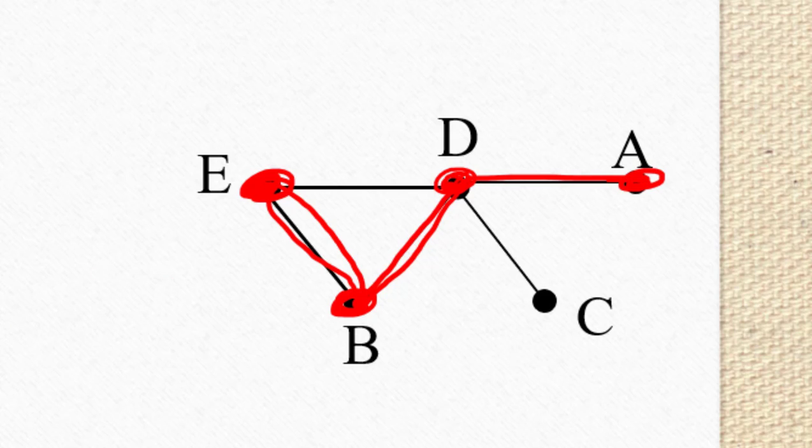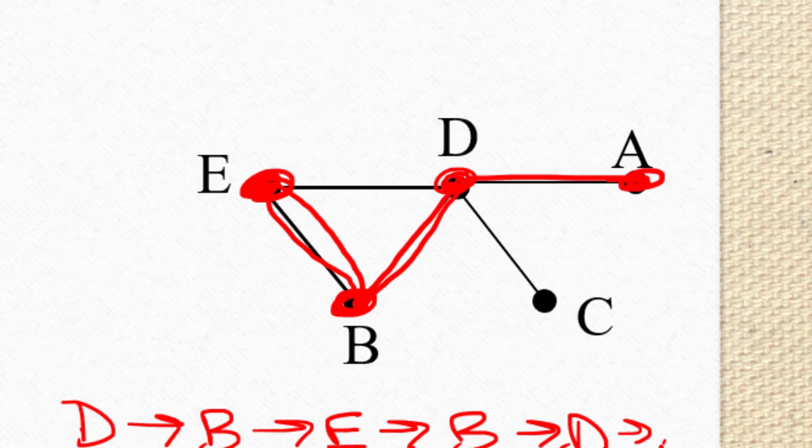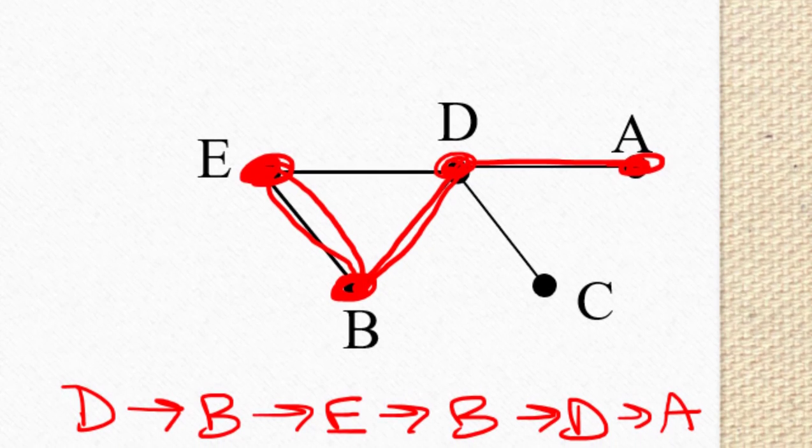In this case, the walk that I just described could be written as going from D to B to E, back to B, back to D, and then to A. That's an example of a walk.